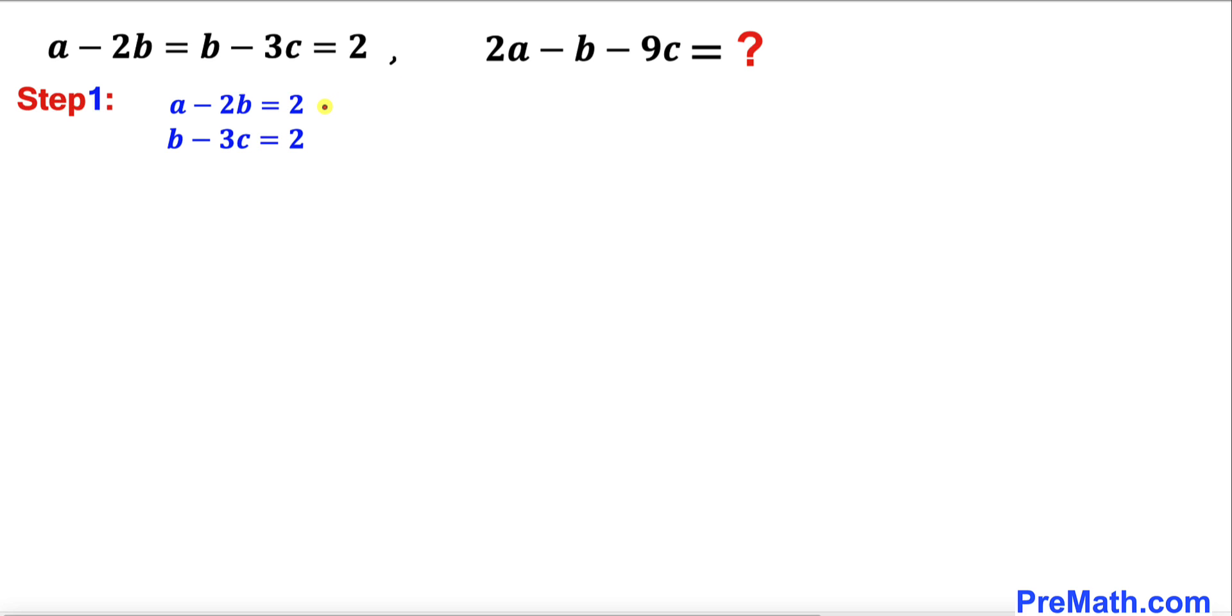Now let me go ahead and call this equation as equation number 1 and this as equation number 2. Now our task is to find the value of 2a minus b minus 9c, so we are not going to find the values of a, b, and c individually. Rather, we are going to manipulate these two equations.